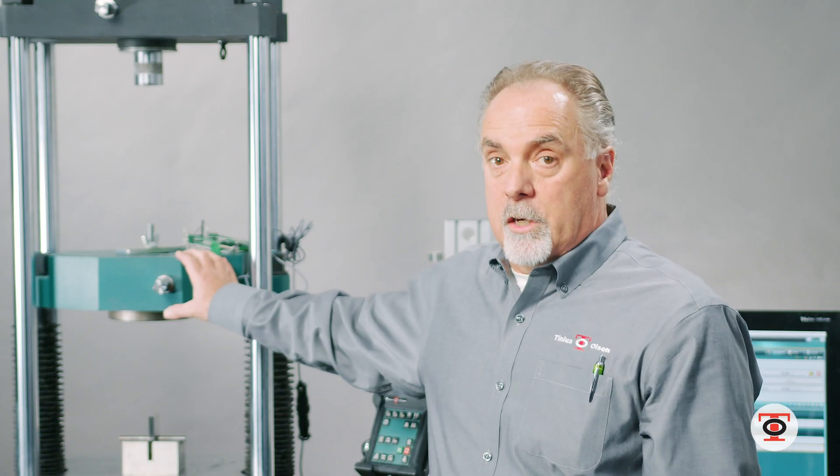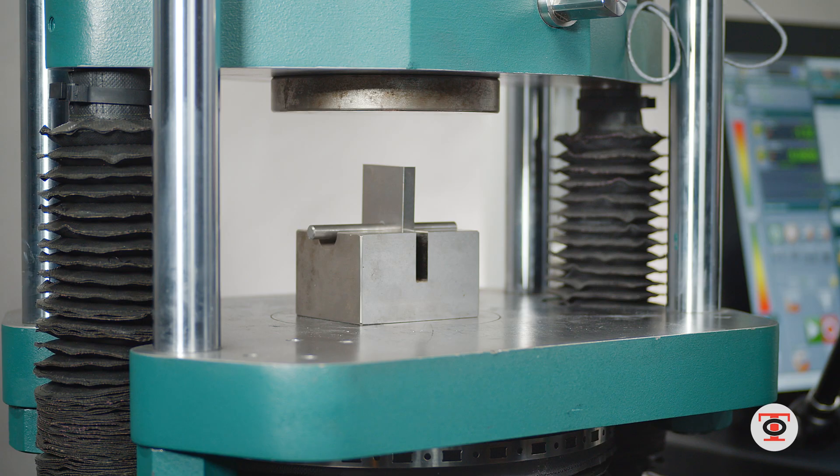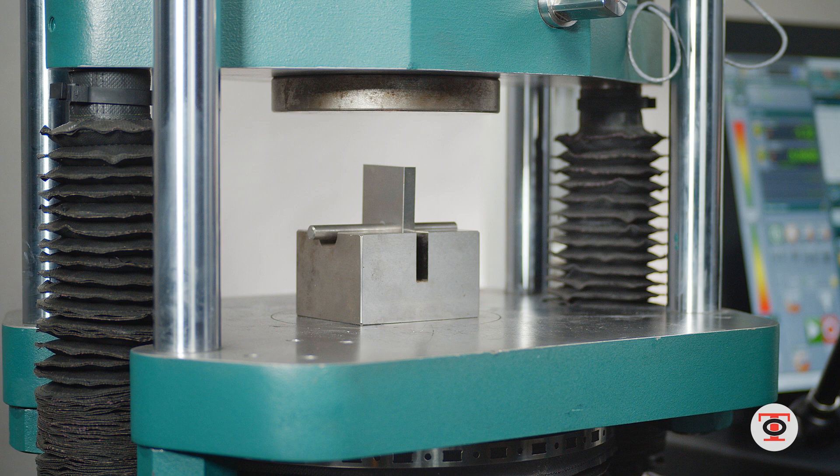If I was only doing double shear tests, I can configure this without the top crosshead and just use the compressive space.